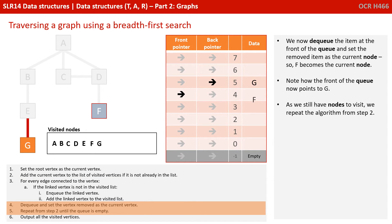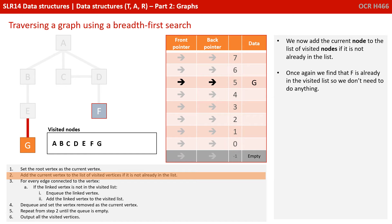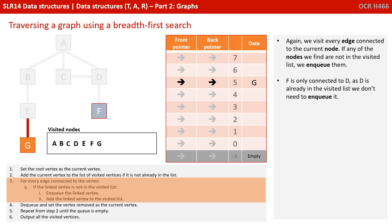We now dequeue the item at the front of the queue and set it to the current node, so F is now the current node and G is now at the front of the queue. We repeat the algorithm. F is already in the list, so nothing to do there. We visit every edge connected to the current node — F is only connected to D, and D is obviously already in the visited list, so there's nothing to enqueue at this point.